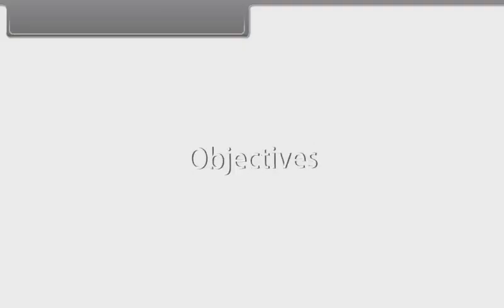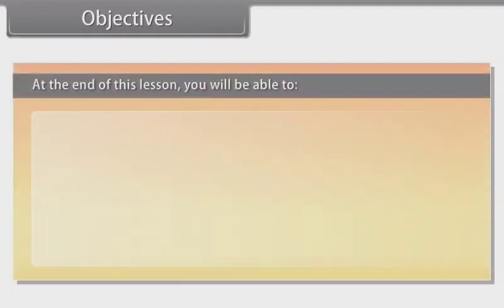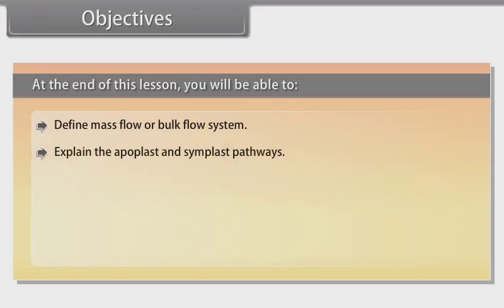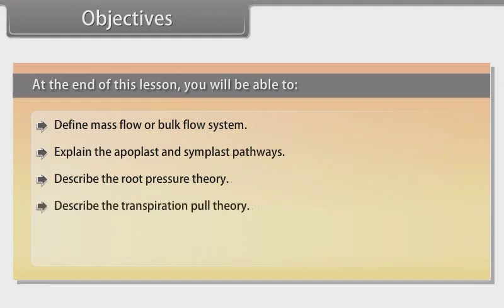Objectives: At the end of this lesson, you will be able to define mass flow or bulk flow system, explain the apoplast and symplast pathways, describe the root pressure theory, describe the transpiration pull theory, and explain the transpiration process.